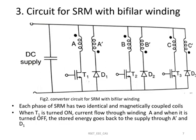The third converter circuit is for an SRM motor with bifilar winding. Bifilar winding is a winding which has two sections with a common terminal. For a particular phase the motor will have two identical and magnetically coupled coils A and A-dash, so each phase winding has two sections with one common terminal. If an SRM motor with bifilar winding is used, we can use this type of converter circuit.